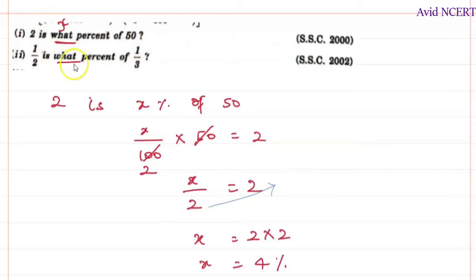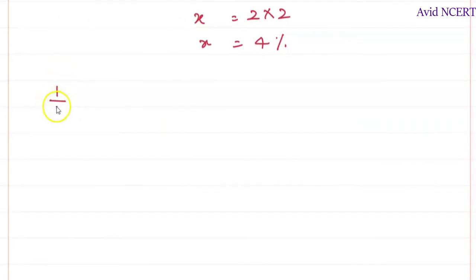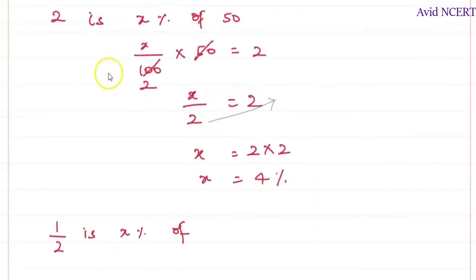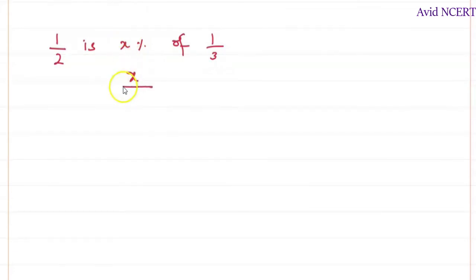Same thing. So when they say for what percent, we are going to take it as x. So 1 by 2 is x percent of 1 by 3. So when it is x percent, we are going to write it as x by 100 times 1 by 3 is equals 1 by 2.